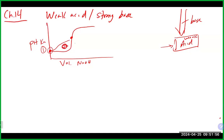The first part is before we begin the titration and add any base - at that point it's really like a Ka-type problem, since we have just a weak acid. The second part is before the equivalence point: a reaction occurs between base and acid, and we hit a buffer situation. You need to do an ICE table to figure out the concentration of your buffer components. Then you have two options: the Henderson-Hasselbalch equation or a second ICE table.